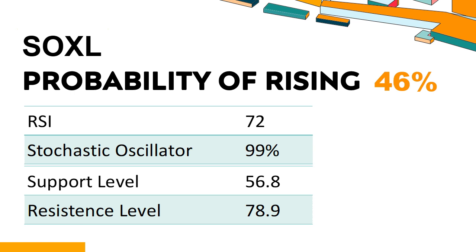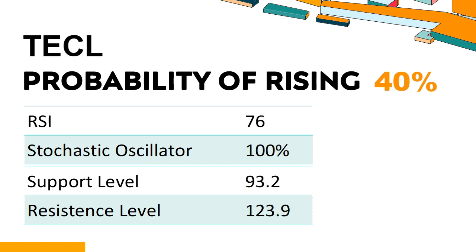SOXL's short-term support level is 60.9. If it falls below 60.9 during the session, it will have a chance to test 56.8. SOXL's short-term resistance level is 72.7. If it breaks through 72.7 during the session, it will look up to 78.9.